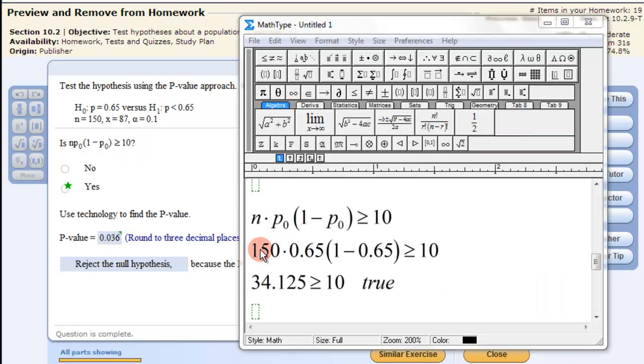So we take the values 150 for n, 0.65 for p-naught, and then we enter that in and calculate it. This is true, so since this is true we can use a normal distribution to test this hypothesis.